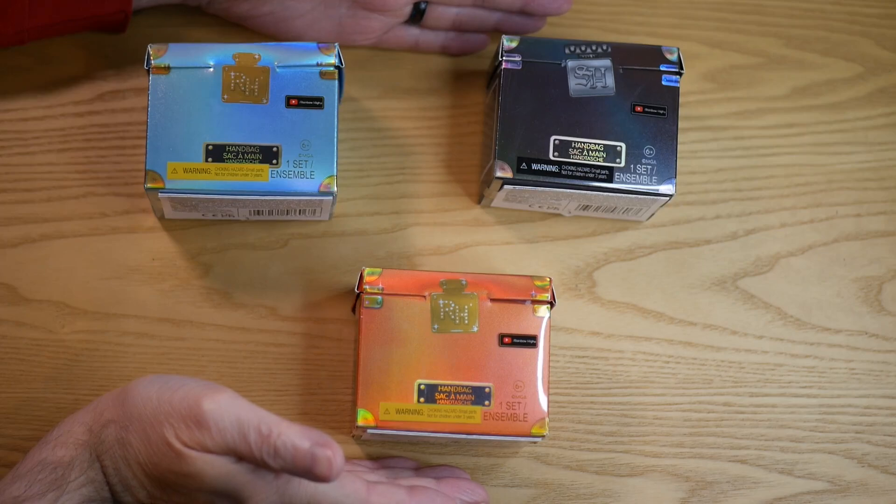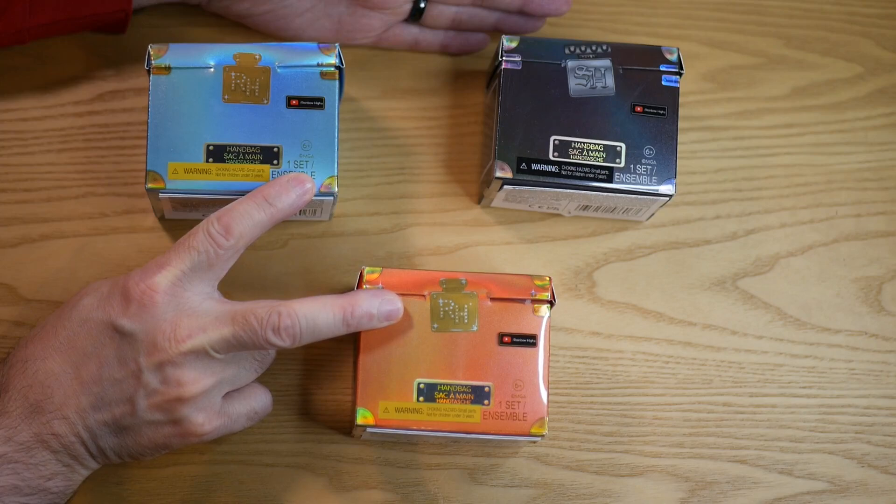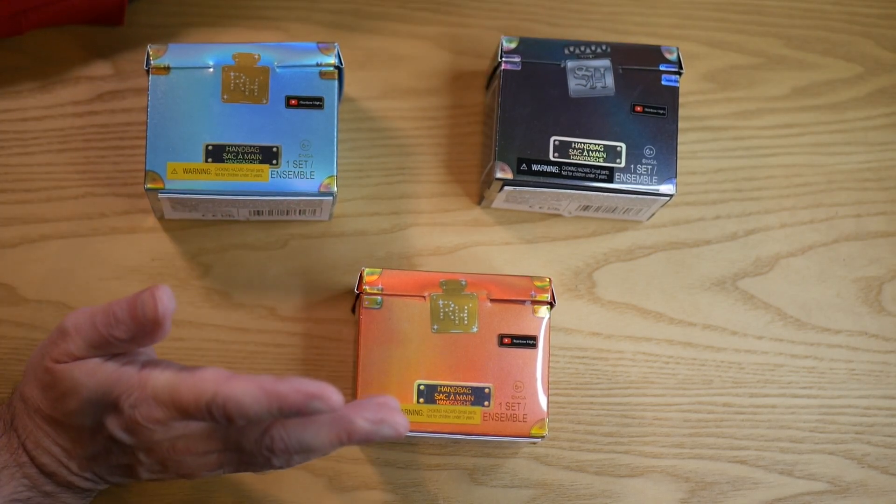Hello again and welcome back to March Bains Midlife Dolly Crisis. So today I'm going to be unboxing these. Now these are blind boxes. They are a combination of two of the Rainbow High and one Shadow High handbag blind box.